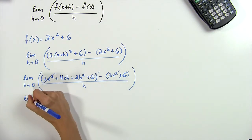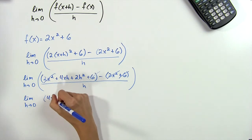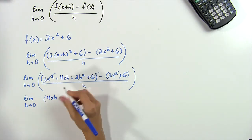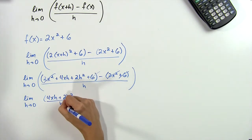That leaves us with the limit as h tends to 0 of 4xh plus 2h squared, all divided by h.